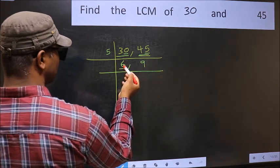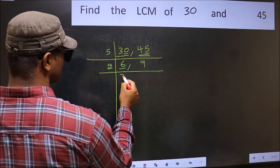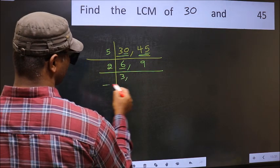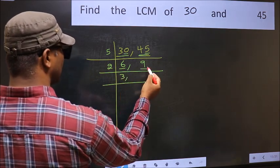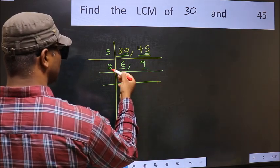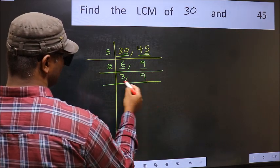Now we have 6. 6 is 2 times 3. The other number is 9 — 9 is not divisible by 2, so you write it down as it is.